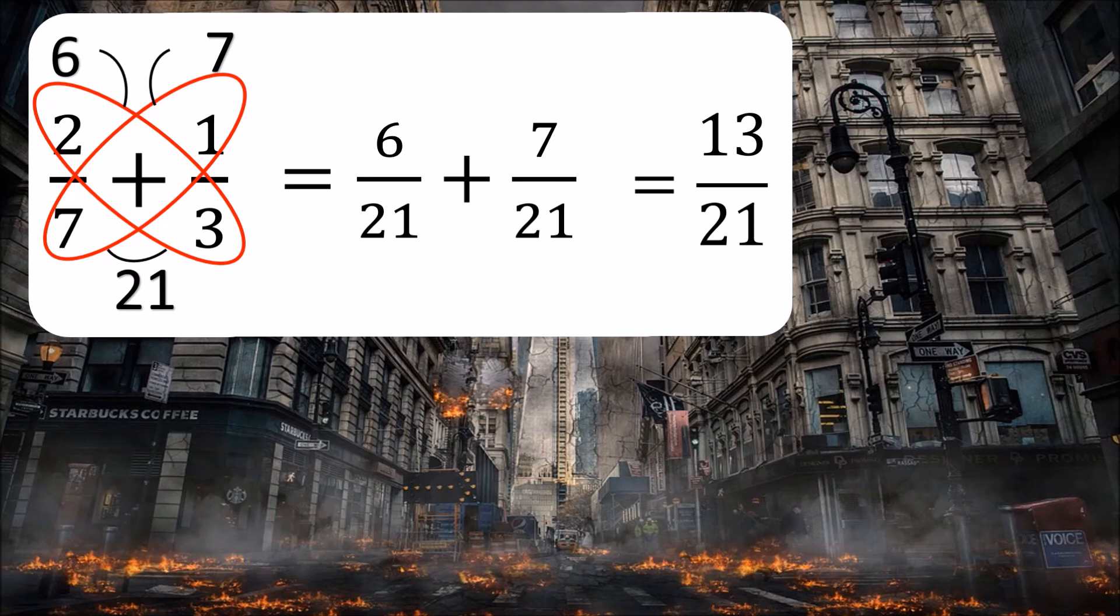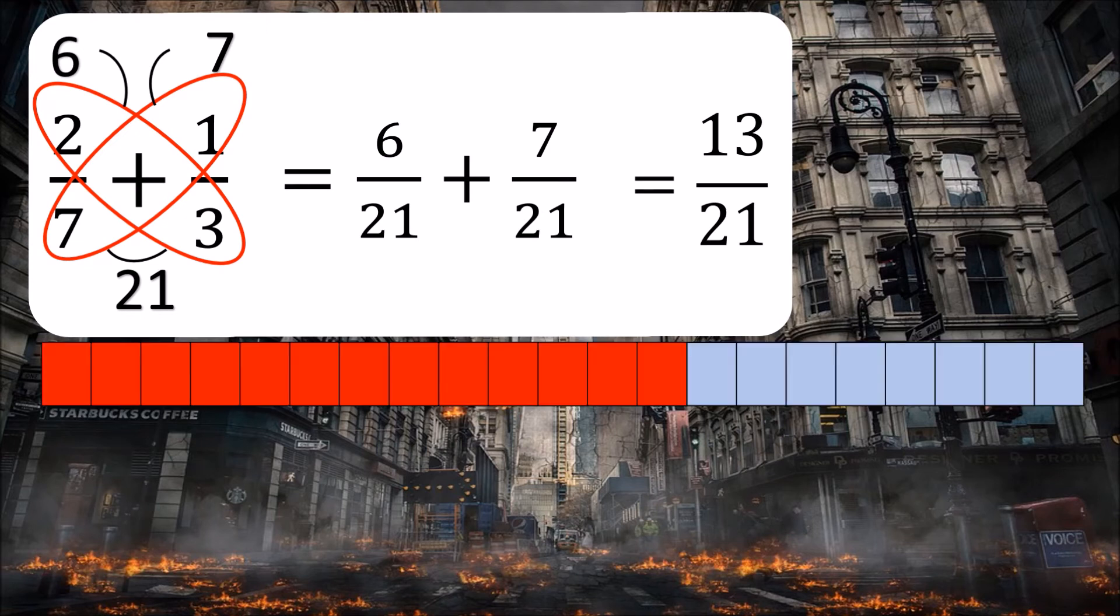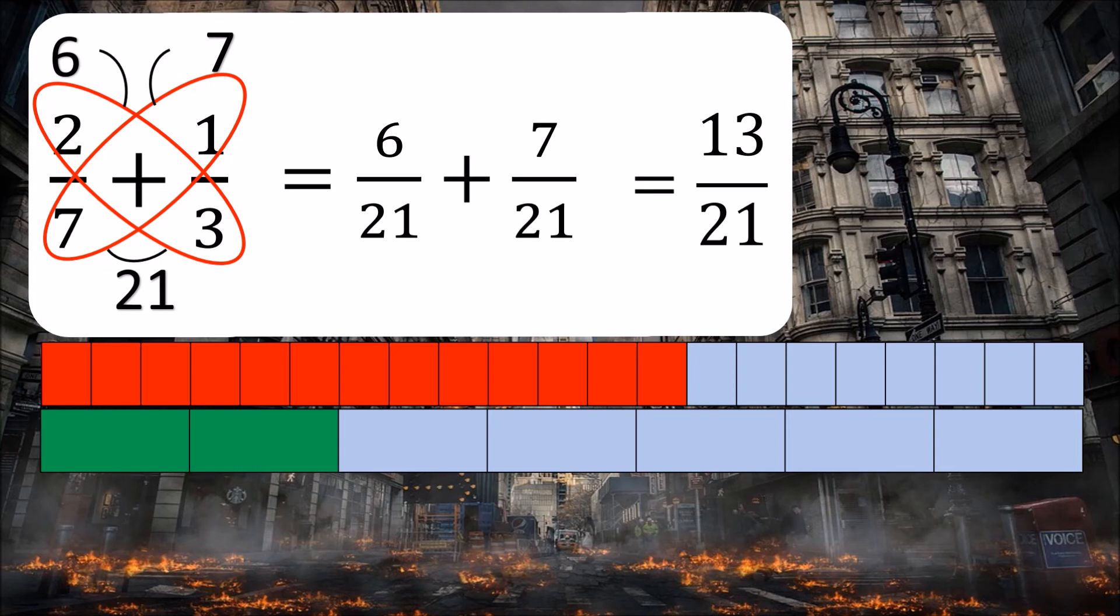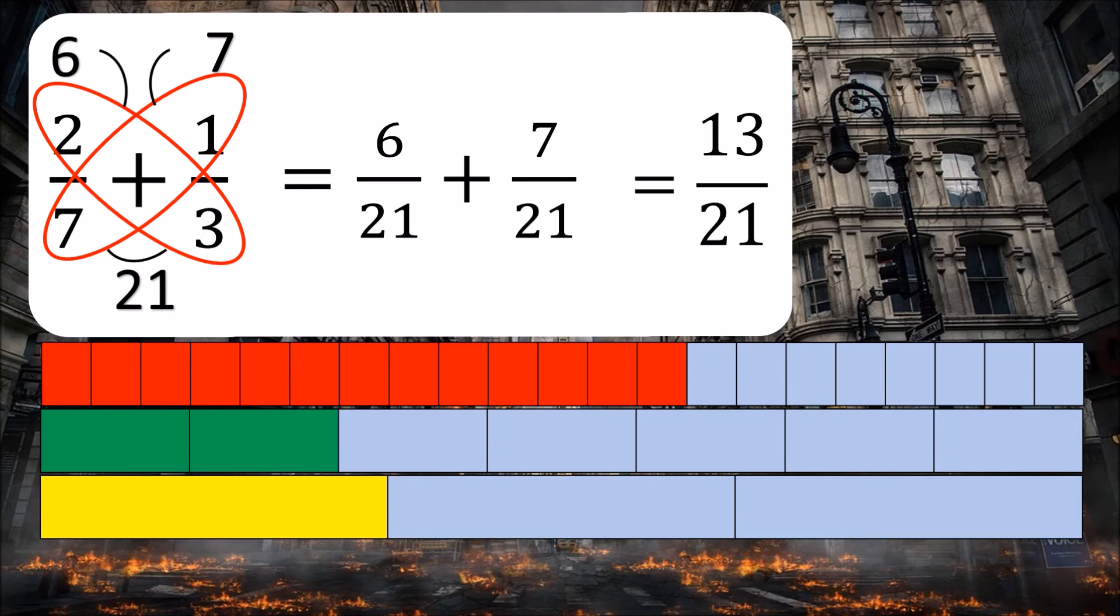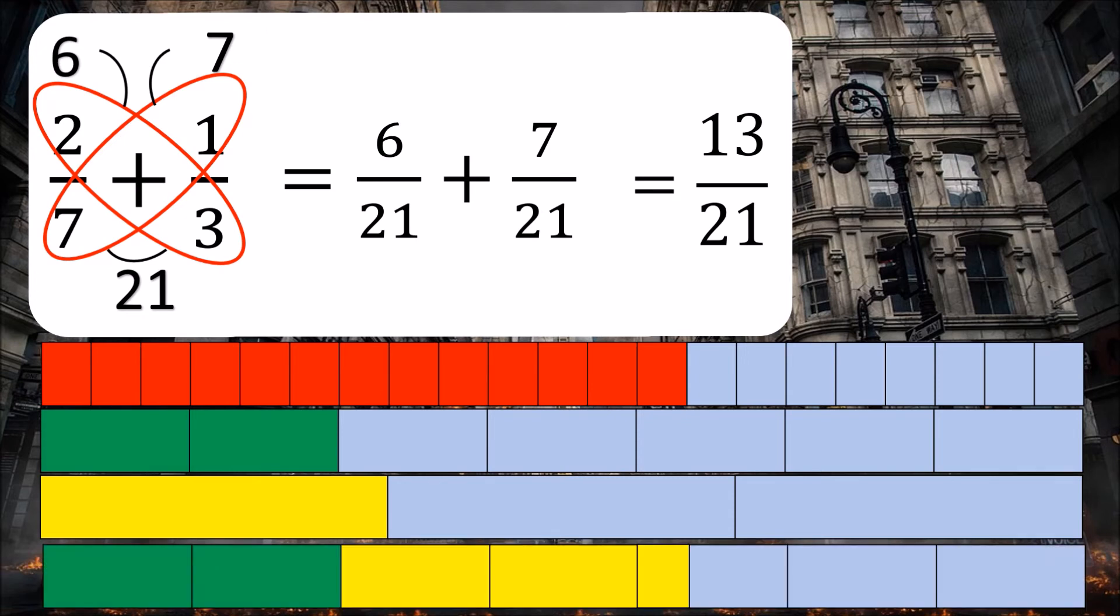And again, we can show this in pictorial form. So here's the answer in pictorial form. We have thirteen twenty-firsts. And then let's look at two sevenths. So we have two parts coloured in of our seven. And one third. Now, when we add these two together, we can see that it is the same length as our answer of thirteen twenty-firsts. However, this isn't an equivalent fraction, because as you can see, while they match up, there isn't a whole piece. So we can't simplify this any more than thirteen twenty-firsts.